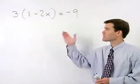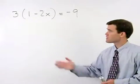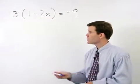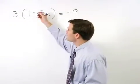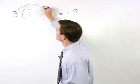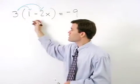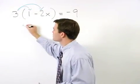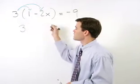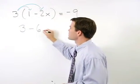To solve for x in this equation, our first step is to simplify the left side by distributing this 3 through both terms inside the parentheses. When we do that, we get 3 times 1, which is 3, and 3 times negative 2x, which is negative 6x.